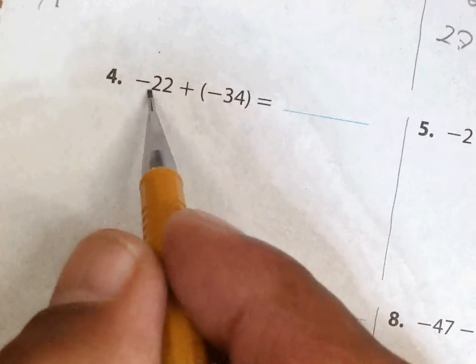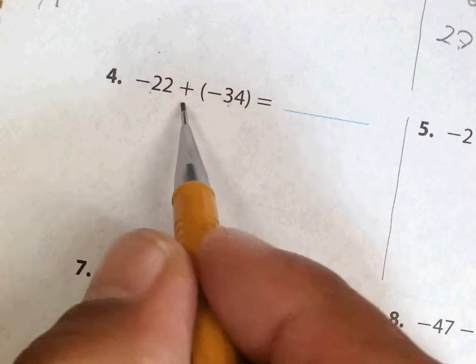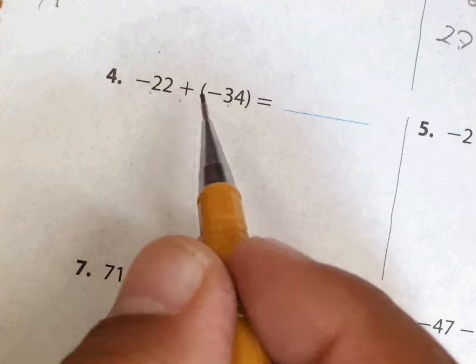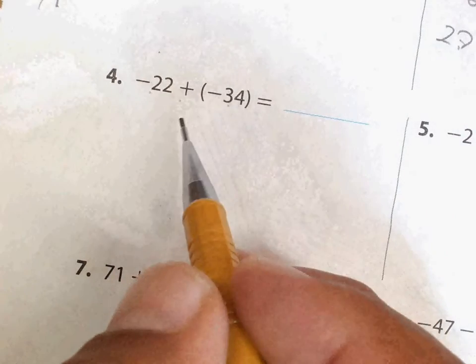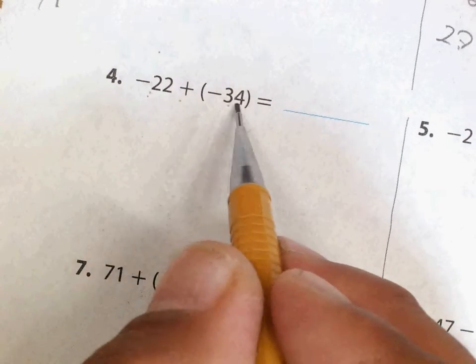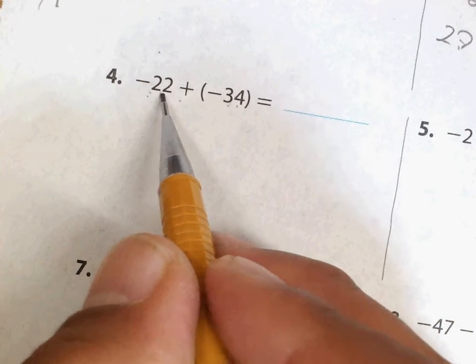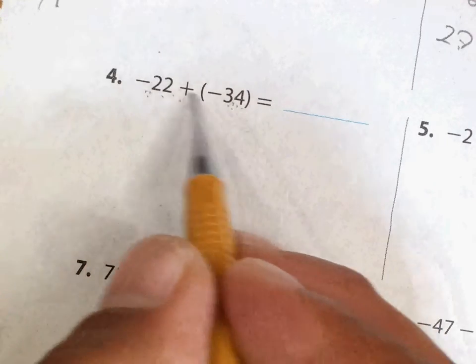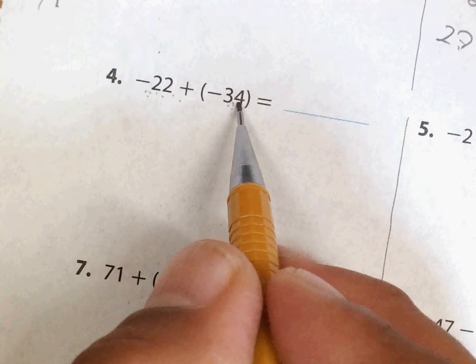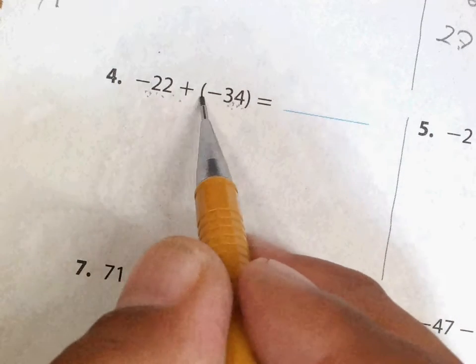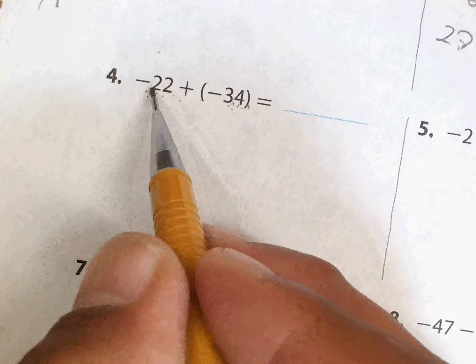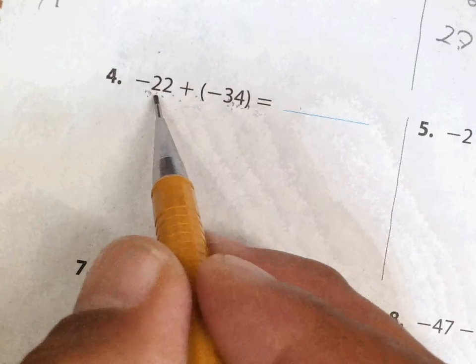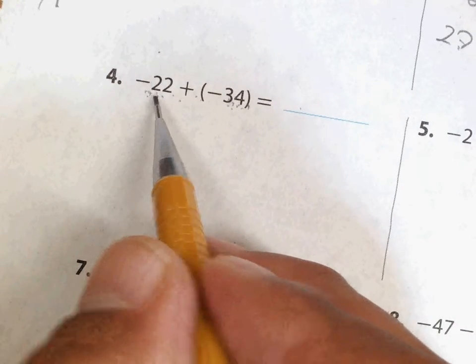Same sign—what do we do? Look at the operation. It's addition, so let me go to the rules that you have in your notes. Same sign add, different signs subtract. Well, these are the same sign. It's not negative times negative equals positive, no. This is negative plus negative.